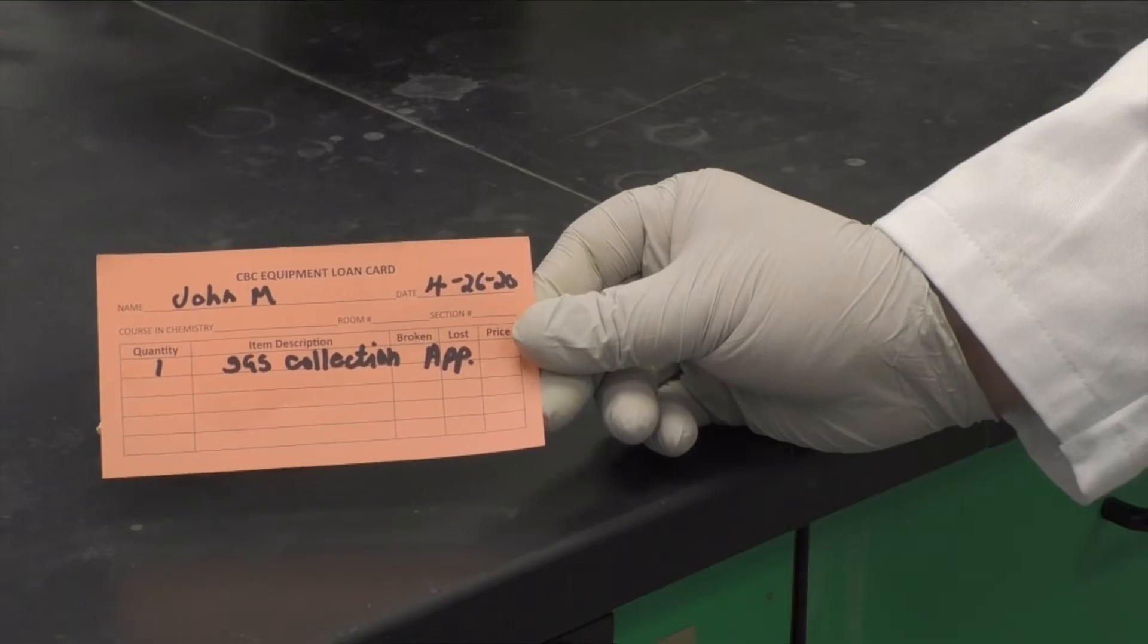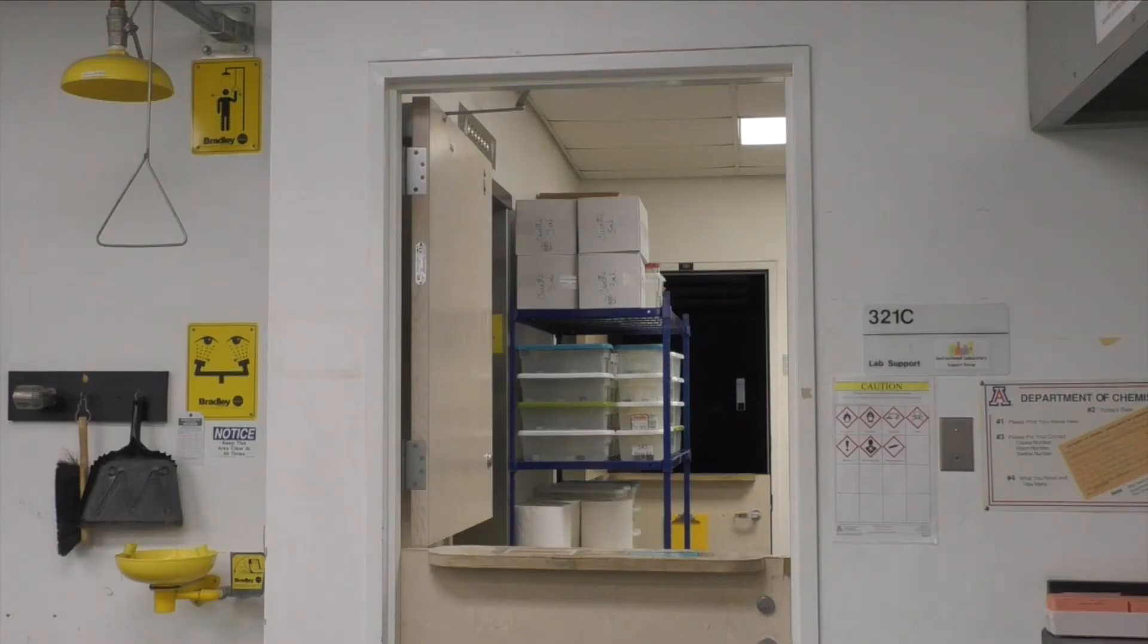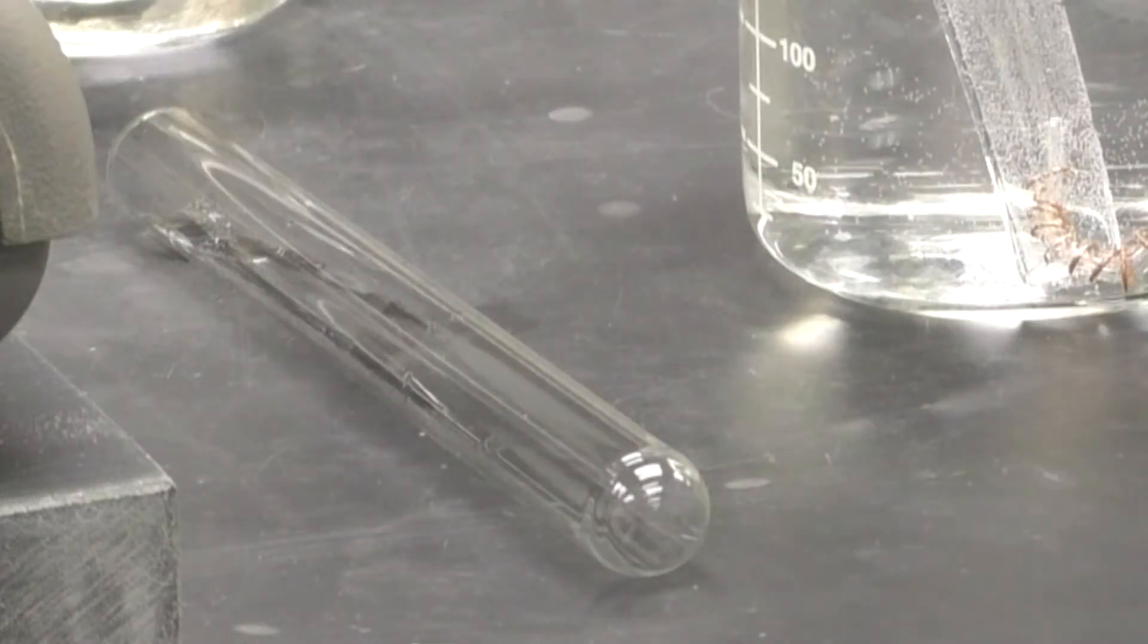To start, check out a gas collection apparatus from the ILSG window. You'll also need to obtain a 6-inch test tube.